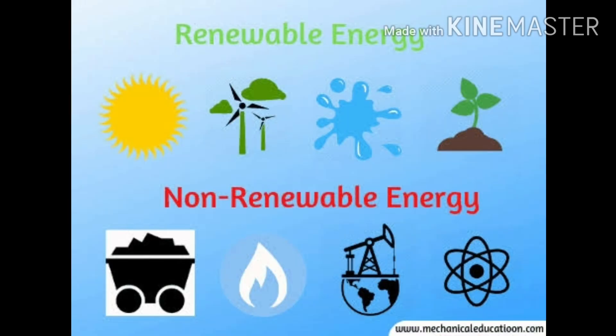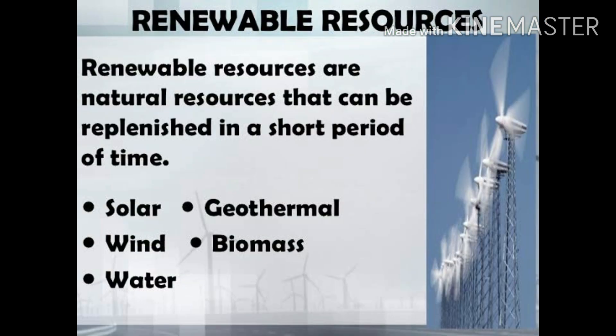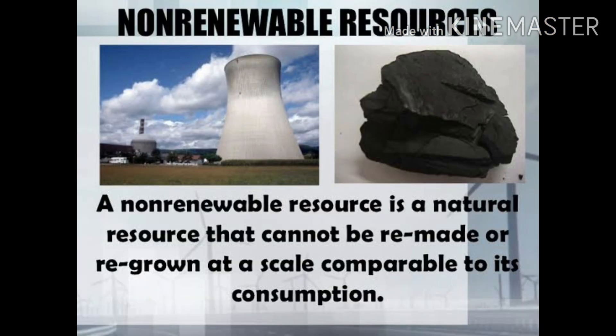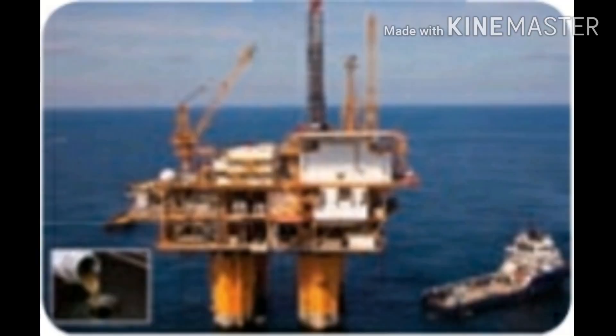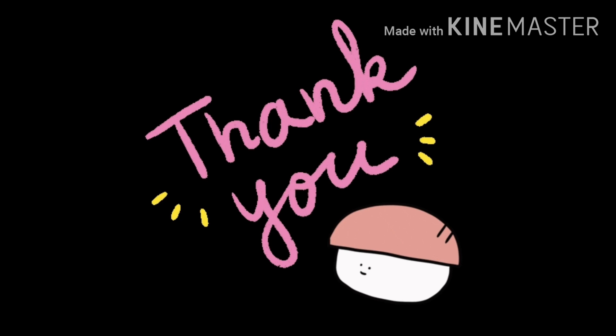Renewable energy — renewable sources of energy are replaced naturally over a period of time. We can keep using these sources for a long period of time. We use these resources for light, transport, cooking, etc. Examples: sun, water, wind. Non-renewable energy — resources which are not easily replaced once used are called non-renewable energy. Examples: petrol, coal, natural gas. I hope you all understood this session.